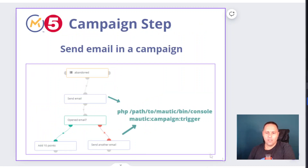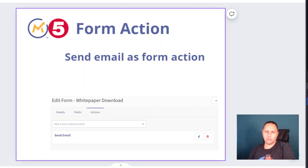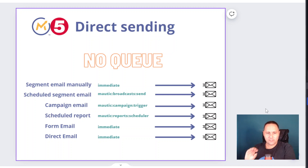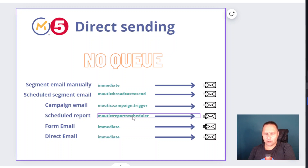Another way is campaigns. With campaign steps you can also send out emails in Mautic — that's managed by the campaign trigger cron job. You can also send emails by form send action, so if someone submits a form, an email is sent to them or to the owner of that form or contact. So altogether: if you're not using a queue and you send a segment manually, as the progress bar fills up the email goes out right away. With a scheduled segment email you need the Mautic broadcast send command running in the background. Campaign emails use the Mautic campaign trigger, scheduled reports use the Mautic report scheduler, and form emails or direct emails are immediately sent once the action happens.